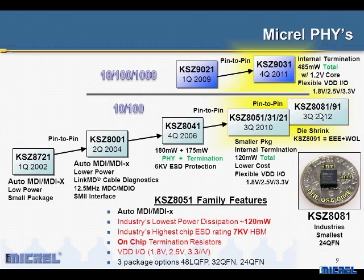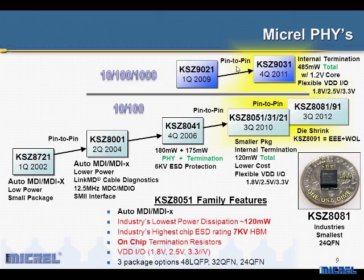Now with internal termination, our parts only consume 120 milliwatts total. The new 8081 and 8091 actually consume much less than this. We've also introduced flexible VDDIO, which allows the MII interface to operate at 1.8, 2.5, or 3.3 volts, eliminating the need for translators. Our parts work above 7kV human body model — they are the lowest power in the industry and in the smallest package. Also of note is the gigabit parts: this year we released the 9031, which is pin-for-pin compatible back to our 9021, at 485 milliwatts total, with flexible VDDIO.